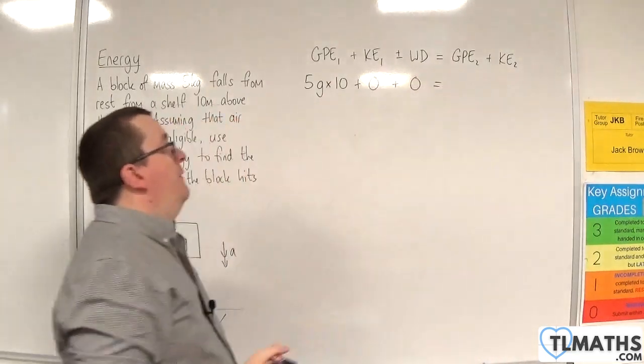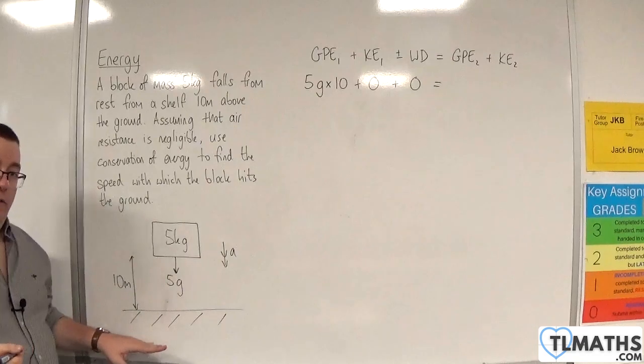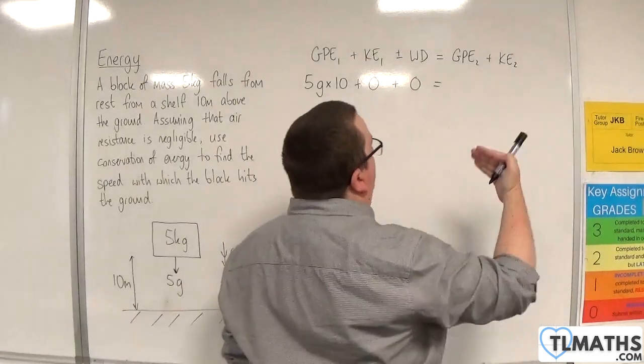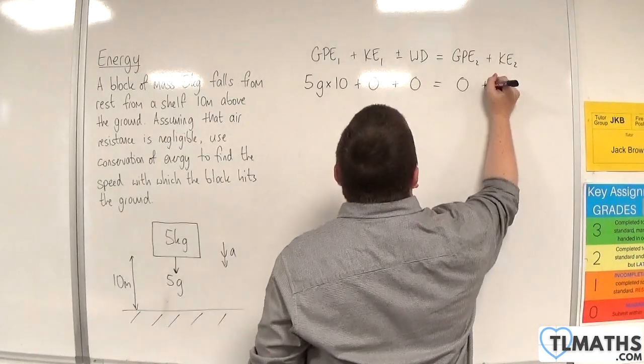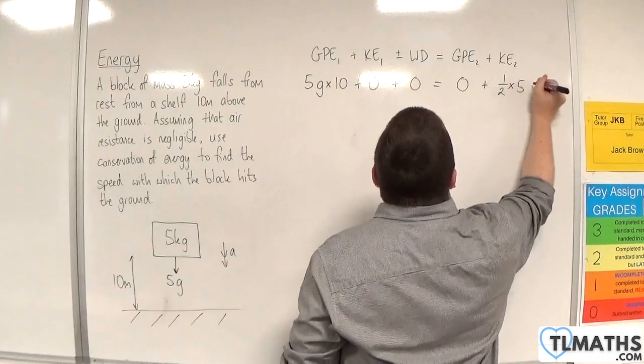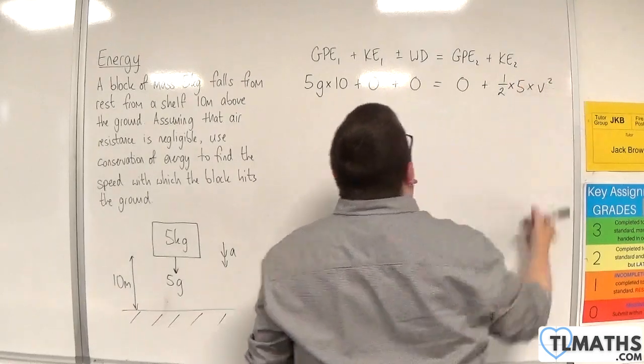Now, the final gravitational potential energy, when it hits the ground, H will be 0. So you'll have M times G times 0. And the final kinetic energy will be 1 half times M times V squared.